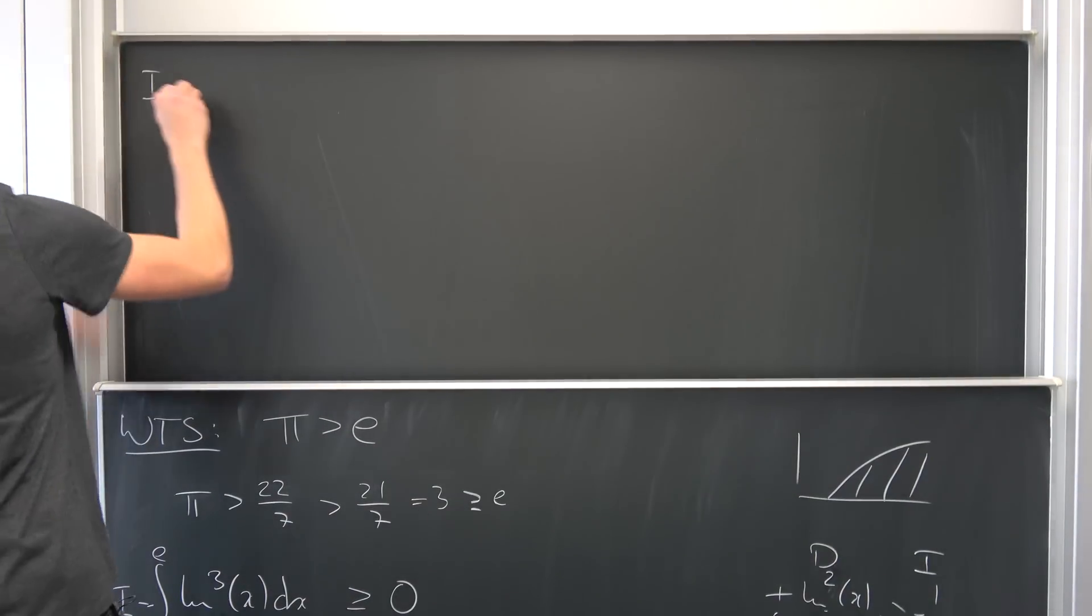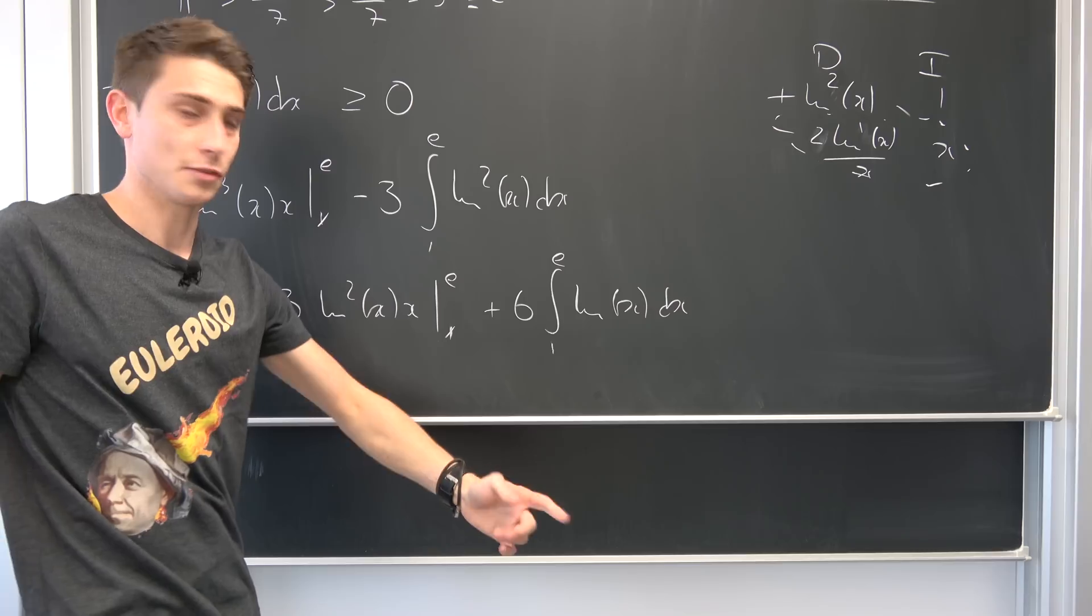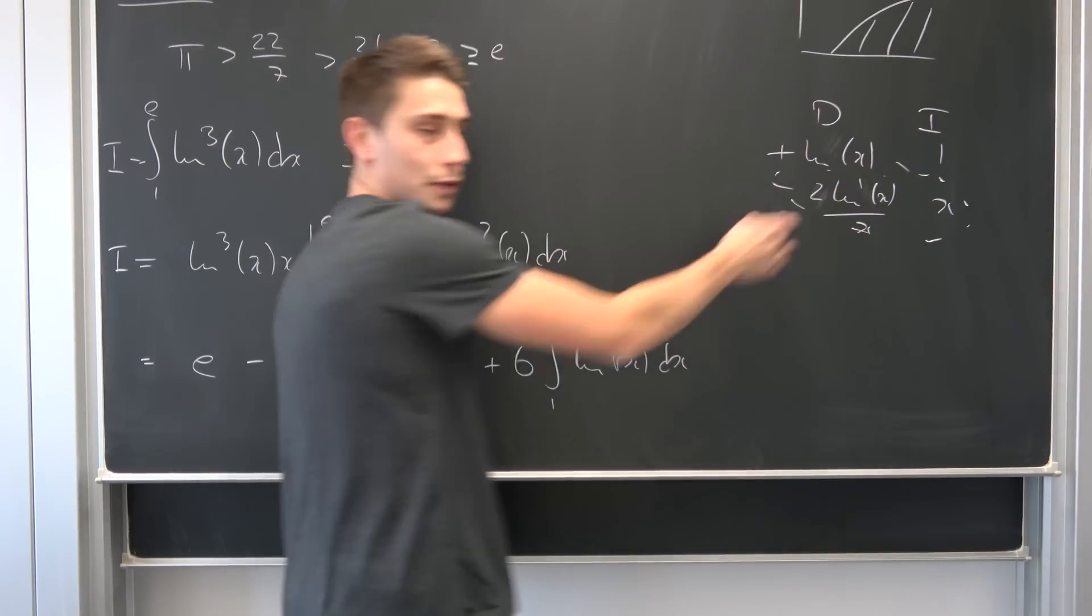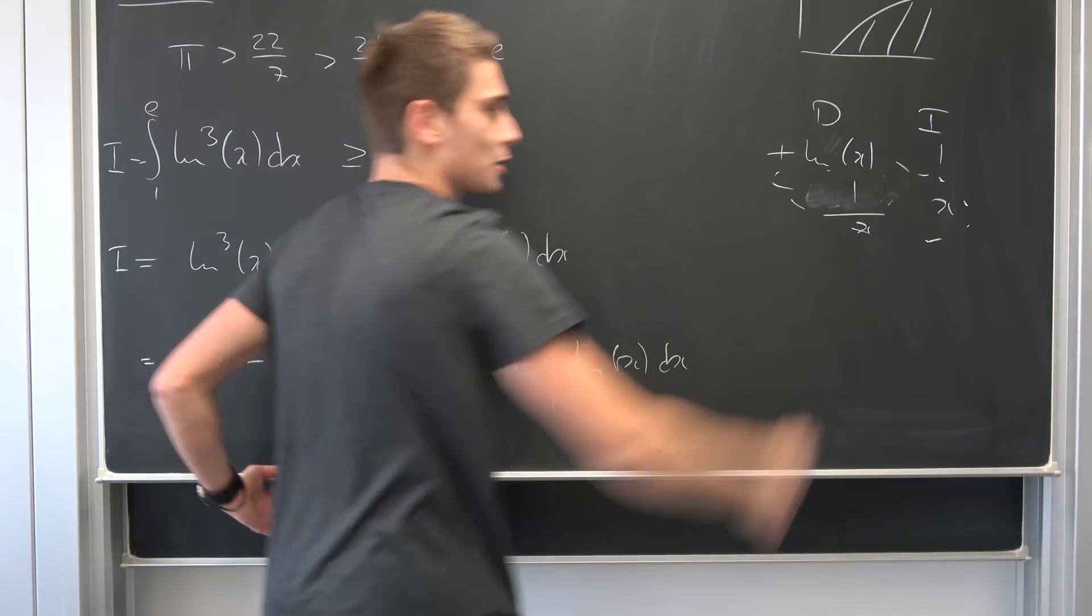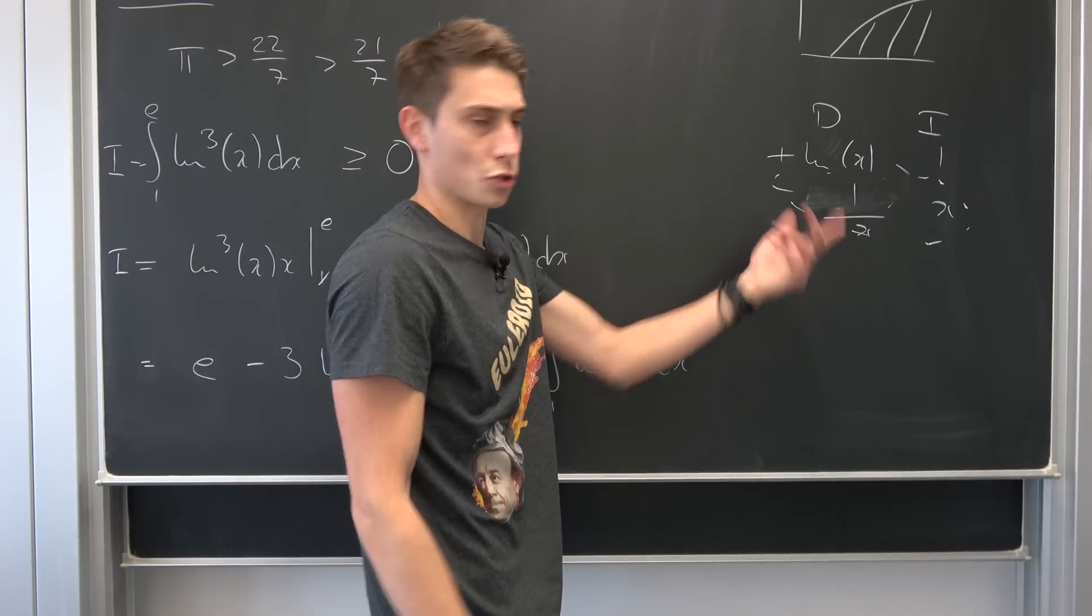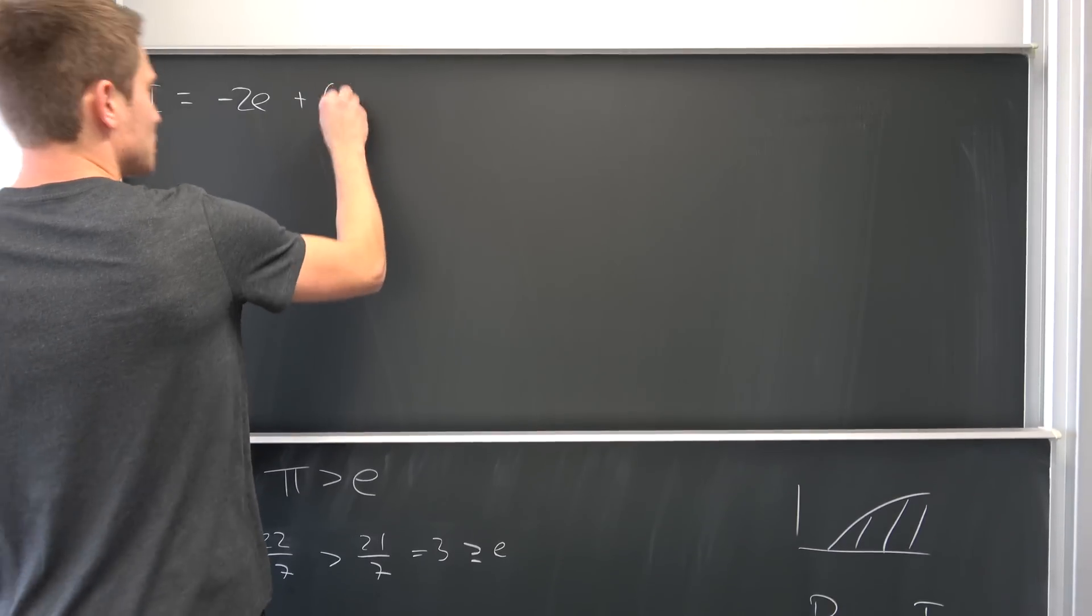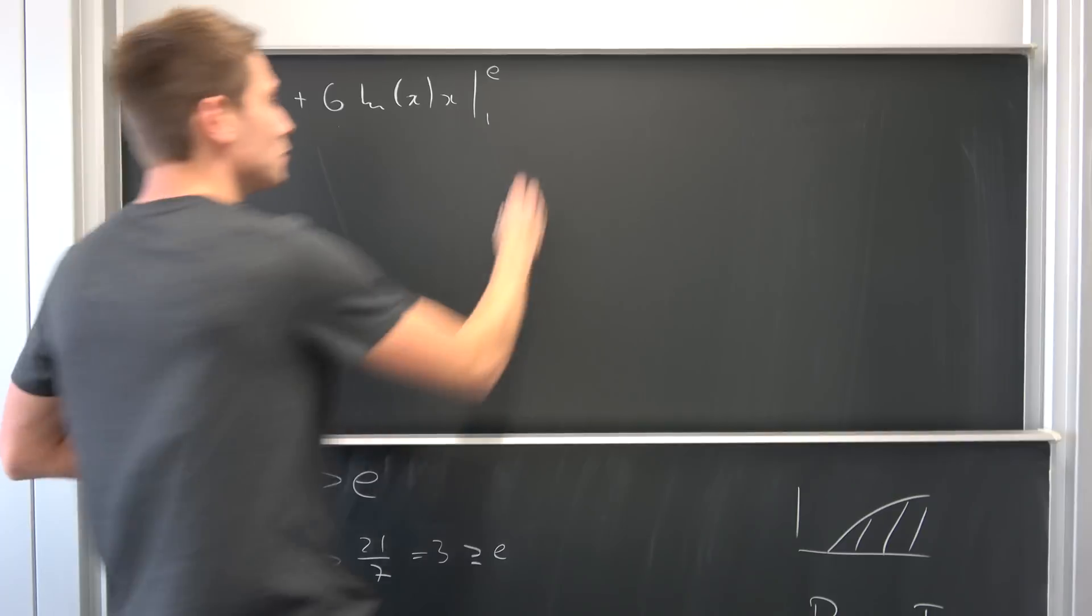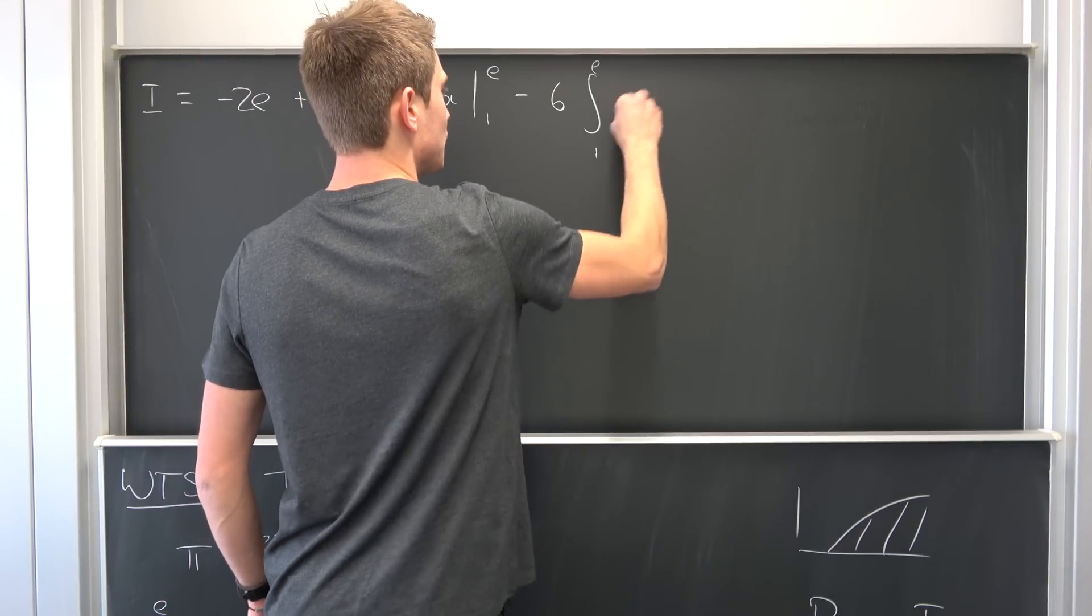So our I is now negative 2 times e. And then we still have this thing right here. Positive 6 times this integral. And once again integration by parts. So reducing this by 1. Natural log to the 0th power is just 1. So this is 1 over x. So multiplying this together. Natural log of x times x. And then the negative, the integral of x over x is 1. So the final step is to just get positive 6 times natural log of x times x, 1 to e. And then negative. And then we have 6 times integral 1 to e of dx.